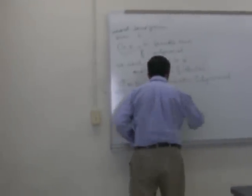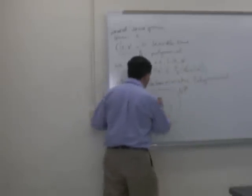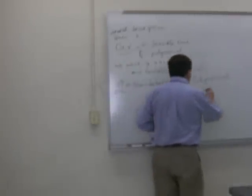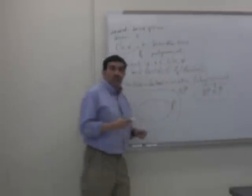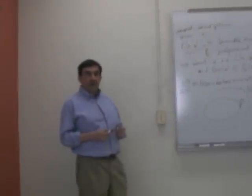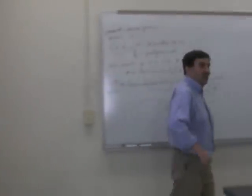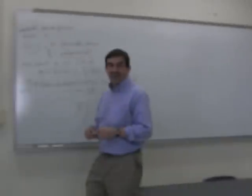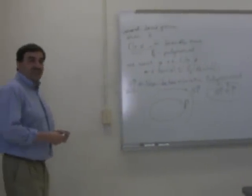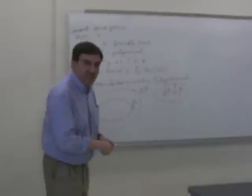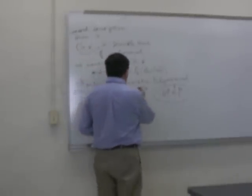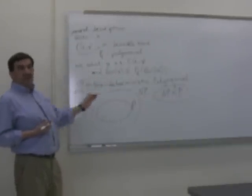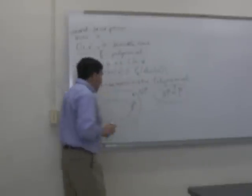So NP is the class of problems where, once you have a guess, you can check it in polynomial time. Within that class, there is a subclass of problems solvable in polynomial time — class P. Whether P equals NP, whether all problems from NP can be solved in polynomial time, nobody knows. This is a million-dollar question — literally one million dollars, one of the famous Millennium Prize Problems.